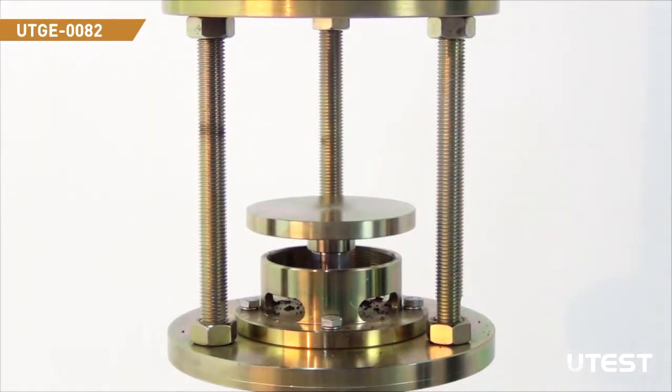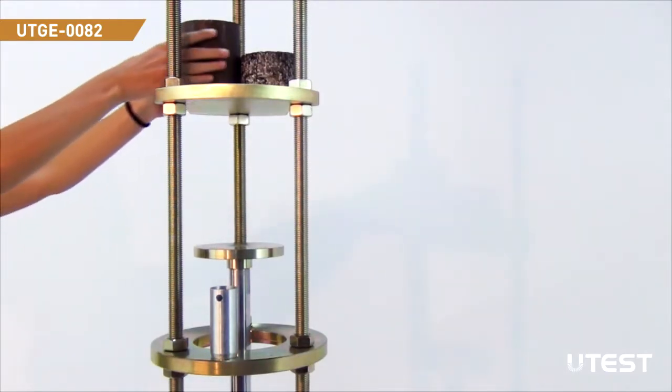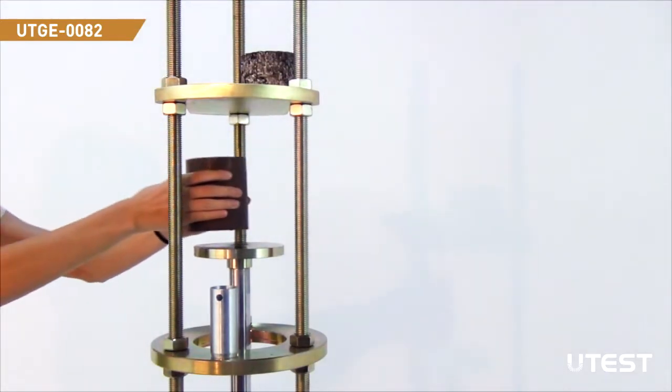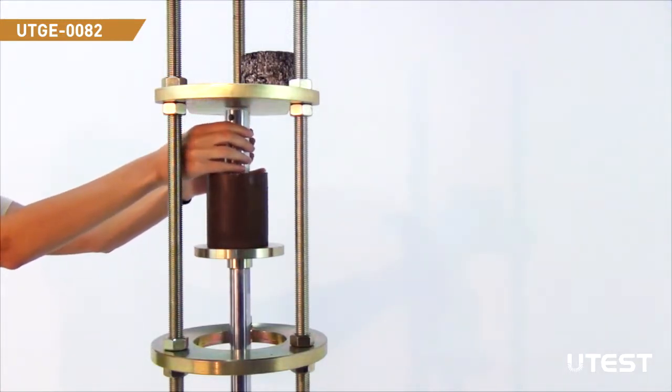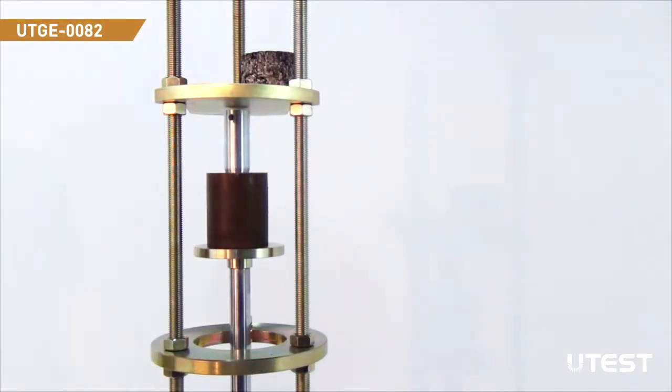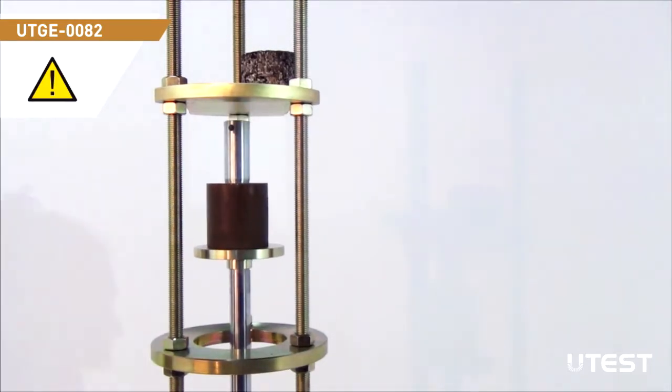If you are going to obtain a specimen from either disturbed or undisturbed sample by using the cutter, place the sample on top of the extruding head. Center the cutter on top of the sample so that the sharp edge faces towards the sample.